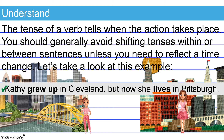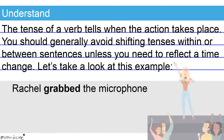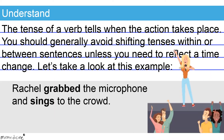Or check out this second example: Rachel grabbed the microphone and sings to the crowd. There is no need to reflect a time change, so both verbs should be in the same tense. The first featured verb, 'grab,' is written in the simple, singular, past verb tense. So we know the singing also took place in the past. However, the second verb, 'sings,' is written in the simple, singular, present verb tense. There is no need to reflect a time change — both verbs should be in the same tense in this instance.